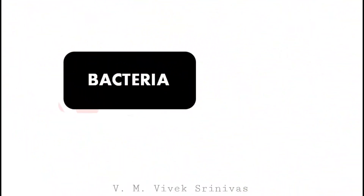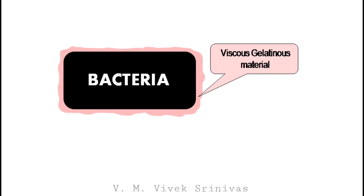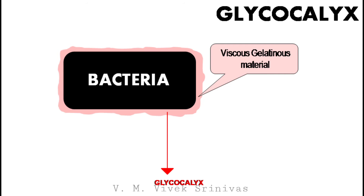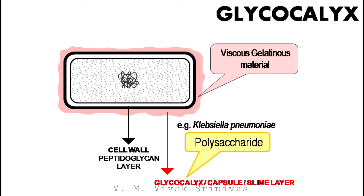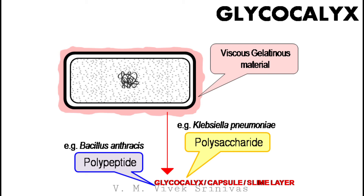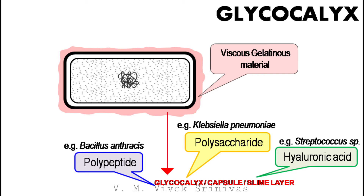Some bacterial species are surrounded by a viscous gelatinous material. This material is termed as the glycocalyx, also commonly referred to as the capsule or the slime layer. This material lies outside the cell wall. This capsule is usually made up of polysaccharide — for example, Klebsiella pneumoniae. But occasionally, this capsule is made up of polypeptide — for example, Bacillus anthracis — and by hyaluronic acid — for example, Streptococcus.